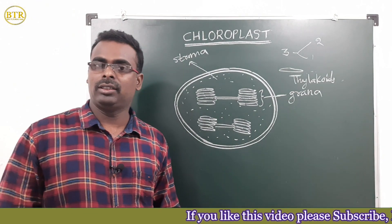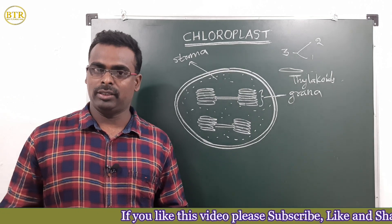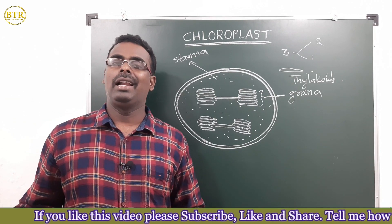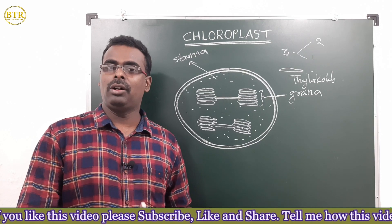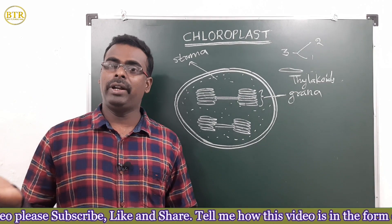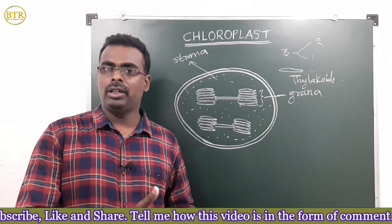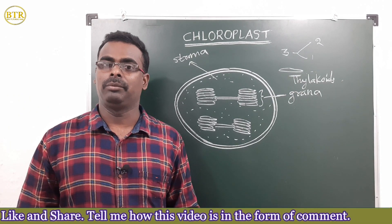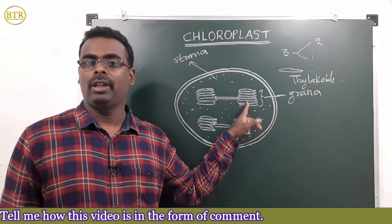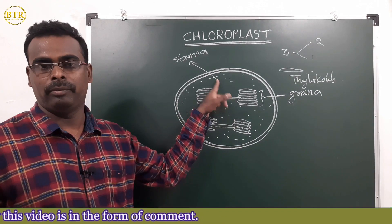Photosynthesis occurs in two phases. The first phase is called the light reaction, also known as the light-dependent reaction. The second phase is called the dark reaction, also called the light-independent reaction. The light reaction occurs inside the grana, and the dark reaction takes place in the stroma.